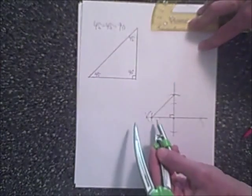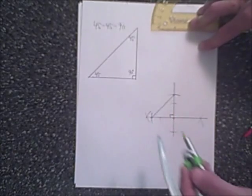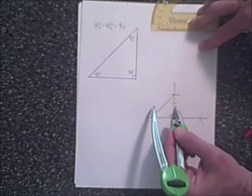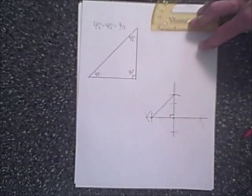And there you have it, 45-45-90, this is also 45-45-90, because these are congruent length, and this is a 90 degree angle.